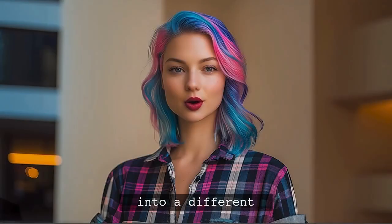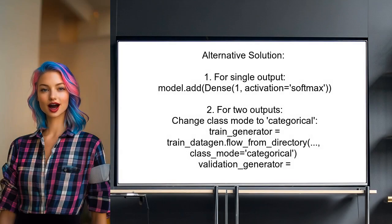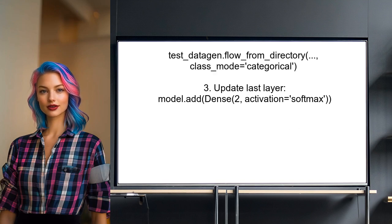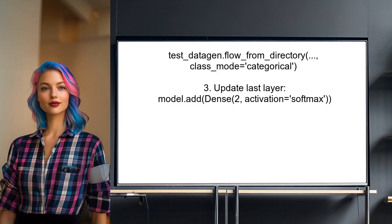Now let's look at a different answer from another user. This alternative solution suggests modifying your model's last layer. If you want a single output predicting either zero or one, change the last layer to have one unit with a sigmoid activation. However, if you need two outputs for your classes, switch to using categorical class mode for your data generators.